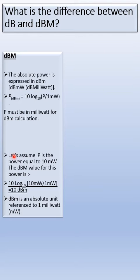Let's assume P is the power equal to 10 milliwatts. The dBm value for this power is 10 log₁₀(10mW/1mW) = 10 dBm. So dBm is an absolute unit referenced to 1 milliwatt.